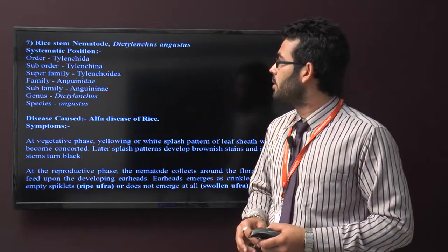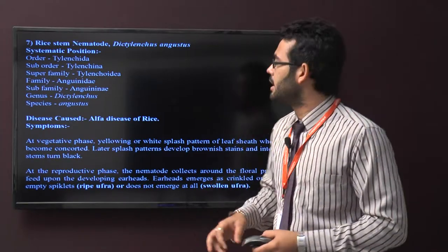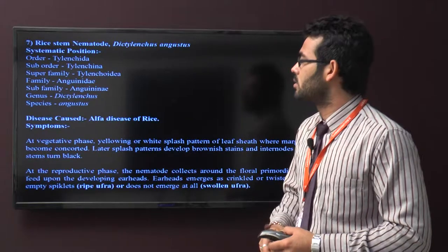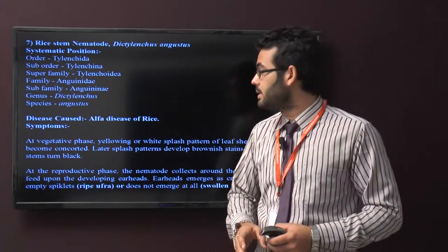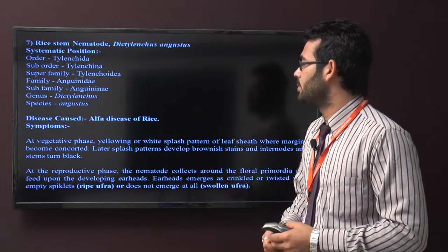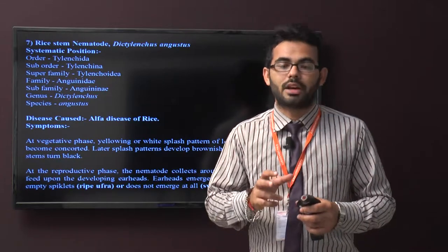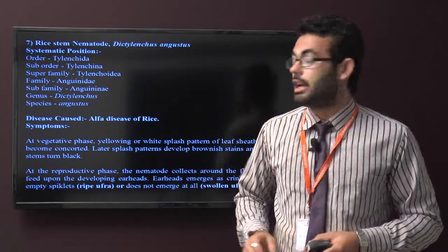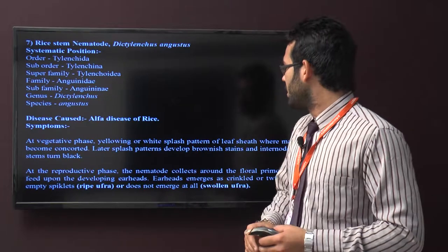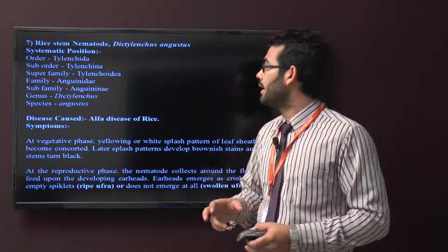Seventh is rice stem nematode, scientific name Ditylenchus angustus. Family is Anguinidae. Disease is also called ufra disease of rice. Symptoms include yellowing and white stripe pattern of leaf blades during vegetative phase. Leaf margins become constricted. During reproductive phase, nematodes collect around floral primordia and feed on developing grain.